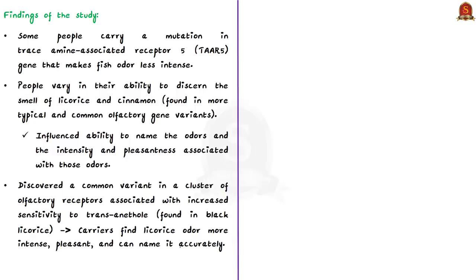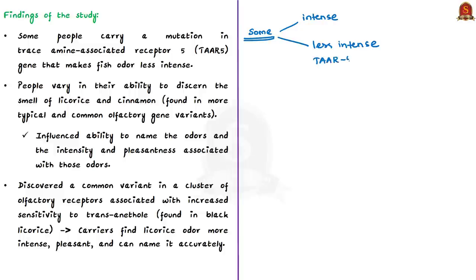For some people, the smell of fish is rather strong and unpleasant. The study found that some people carry a mutation in a particular gene that makes fish odor less intense. The olfactory receptor gene called Trace Amine-Associated Receptor phi, or TAAR-phi, was pinpointed as the reason for this variation in smell perception. A variant in this TAAR-phi gene affects the perception of fish odor.